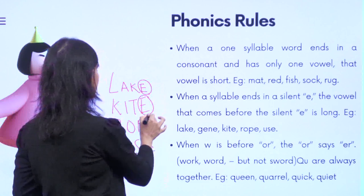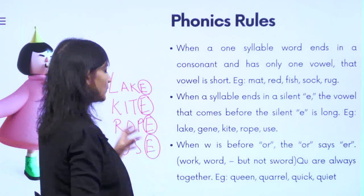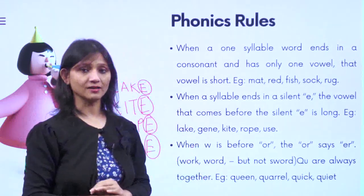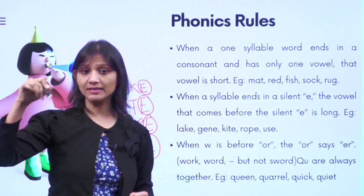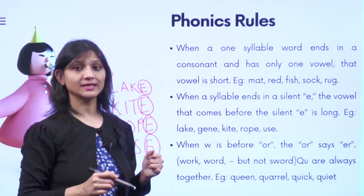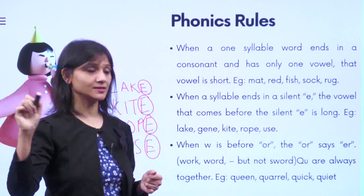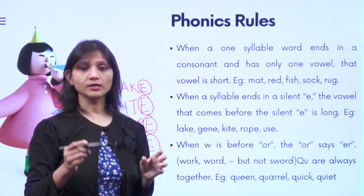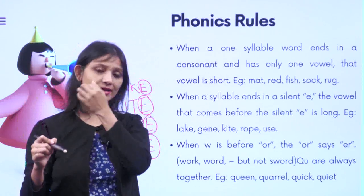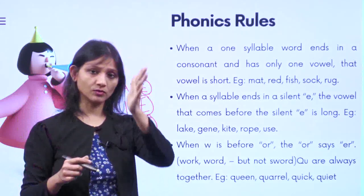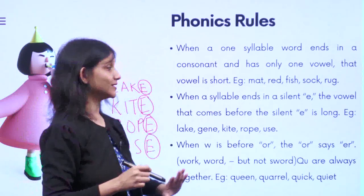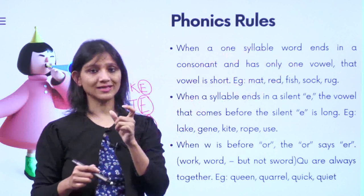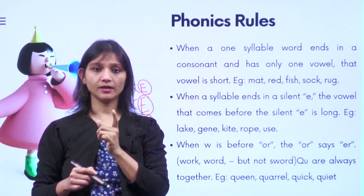When a syllable ends with a silent E, the sound of the vowel is long. We cannot say 'lack' — we say 'lake', because you see an E at the end. 'Kite' — we say 'kite' because there is an E at the end. 'Rope', 'use' — E at the end. So when you see an E at the end, you realize the vowel makes the long sound, unlike words ending in a consonant where the sound is always short.